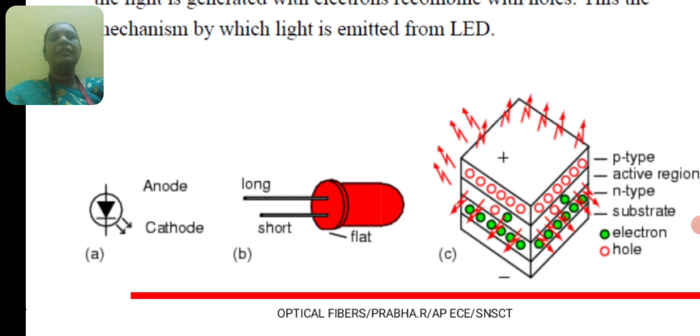Here, the green color dots represent the electrons and red color represents the holes. The light is emitted from the LED when electrons and holes are recombined.